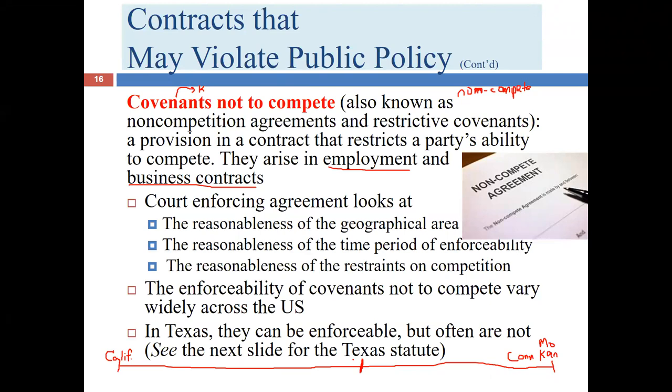Whatever state you're in, except California, courts review three aspects of a non-compete agreement. First, is the geographical area reasonable? For a salon, people won't travel more than about 25 miles to get a haircut, so a nationwide restriction would be unreasonable. For a salesperson covering Texas, Oklahoma, and New Mexico, that territory would likely be a reasonable geographic area for restriction. The geographic area should reflect the realities of the particular market and industry.